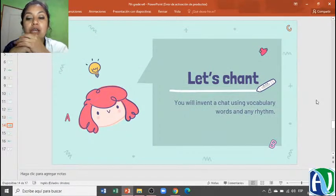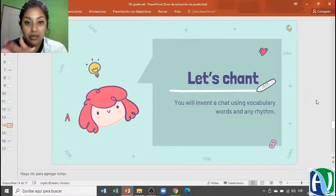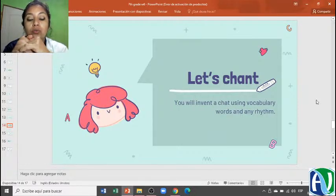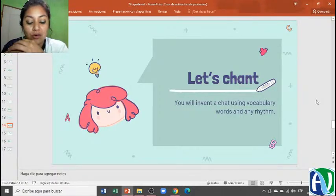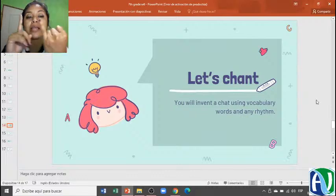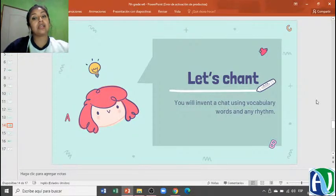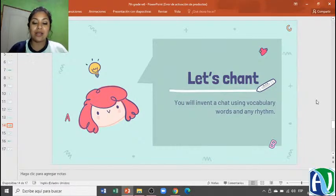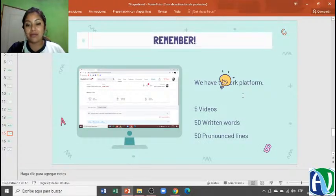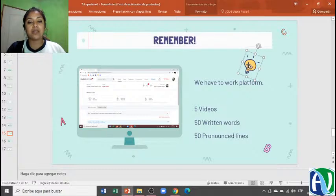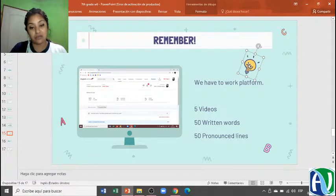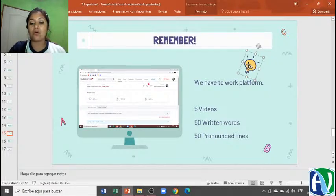Let's going to make a chant. Recuerden que ustedes tienen que hacer su chant y me lo tienen que enviar. You have to invent your own rhymes or you can use one that you already have and use vocabulary words de los tres vocabularios que vimos el día de hoy. Pueden ser las prepositions of place, the rooms and furniture and also the direction verbs. Ustedes pueden incluso mezclar los tres vocabularios o utilizar únicamente uno. Hacer el ritmo que ustedes quieran o utilizar uno que ya existe. No se les olvide por favor que debemos trabajar en plataforma. Nos corresponde ver cinco videos, 50 palabras escritas, o sea que ustedes aprendan a escribirlas, y 50 palabras pronunciadas.